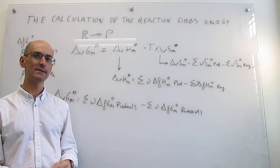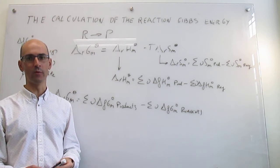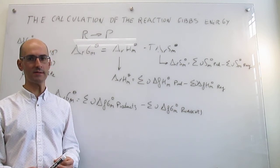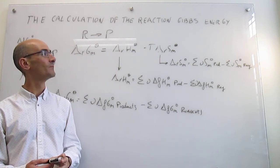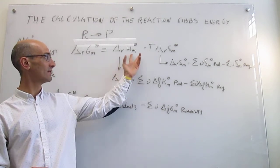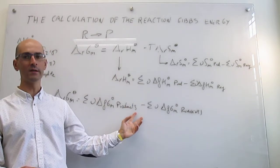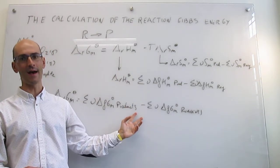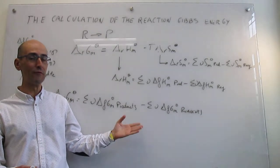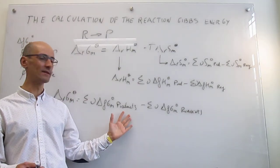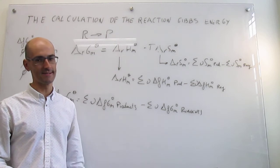This video has summarized two ways to calculate the standard molar change in reaction Gibbs energy. The first utilizes the definition of the reaction Gibbs energy as ΔG° = ΔH° - TΔS°. The second leverages the fact that Gibbs energy is a state function, so the reaction Gibbs energy is simply the sum of Gibbs energies of formation of products minus those of the reagents.